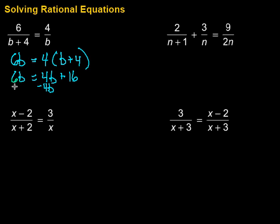Then, got to get all my b's together. So I'm going to subtract 4b from both sides. So I have 6b minus 4b is 2b. Then, that's equal to 16. And finally, divide by 2, divide by 2, we get b equals 8.